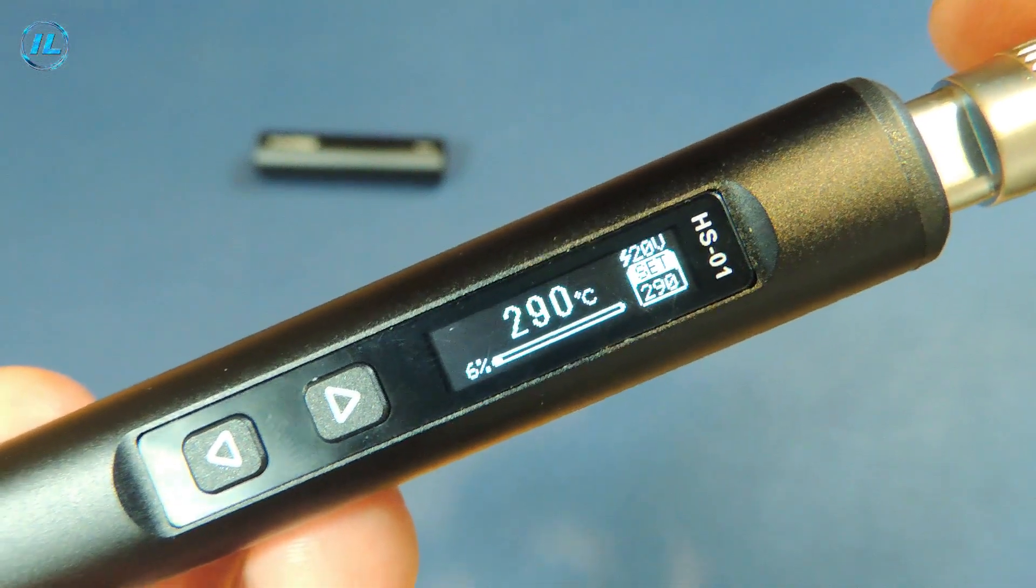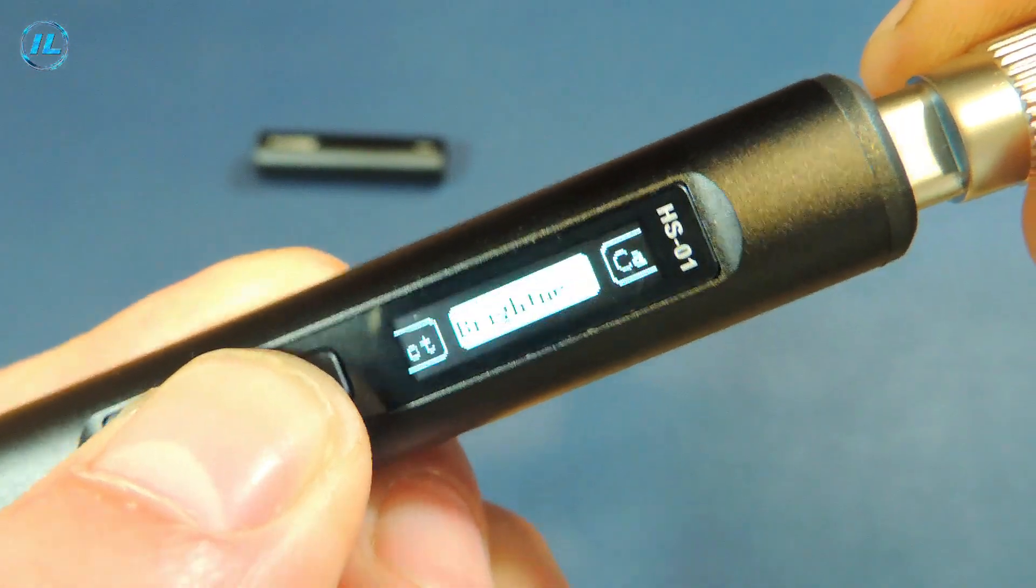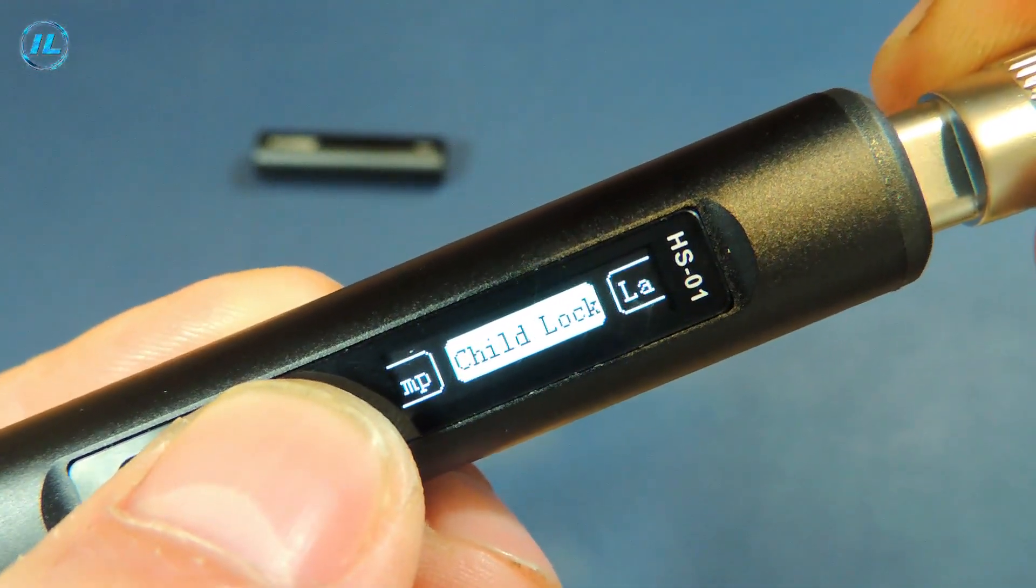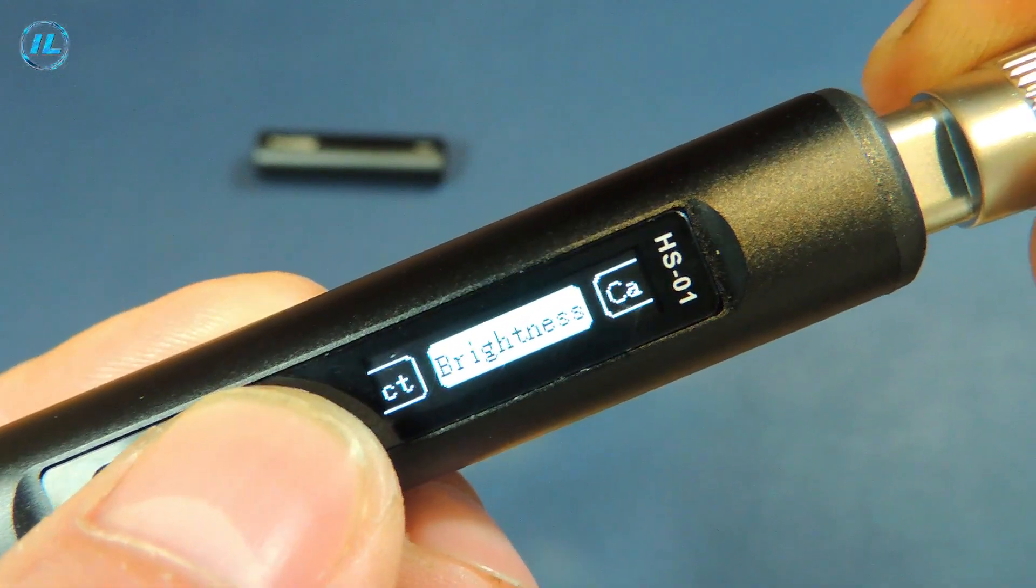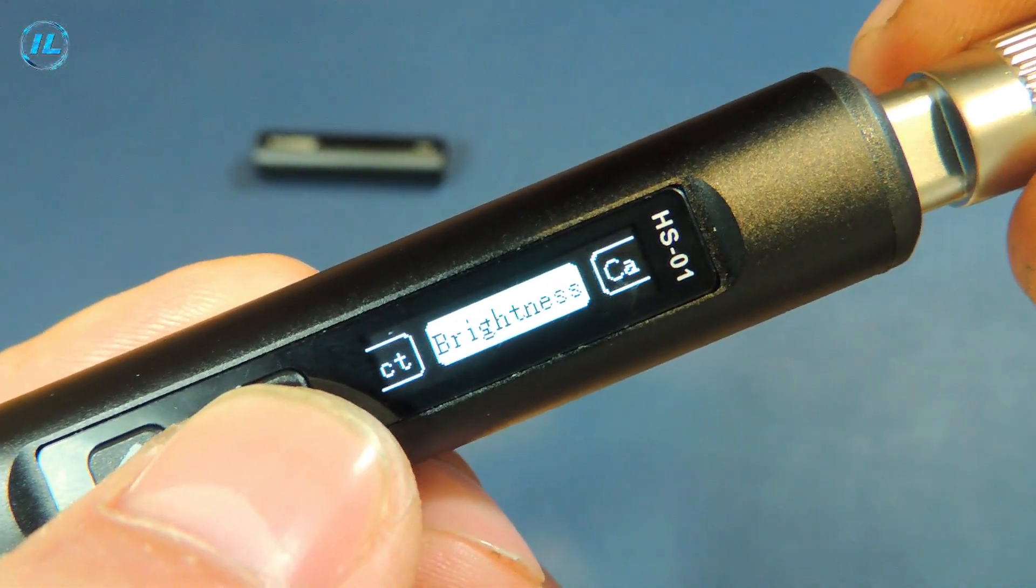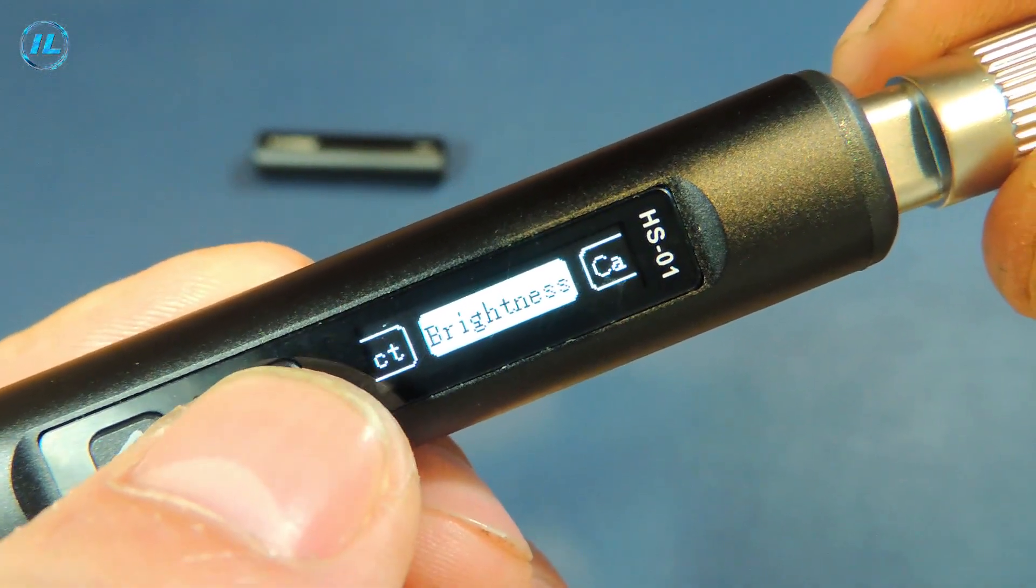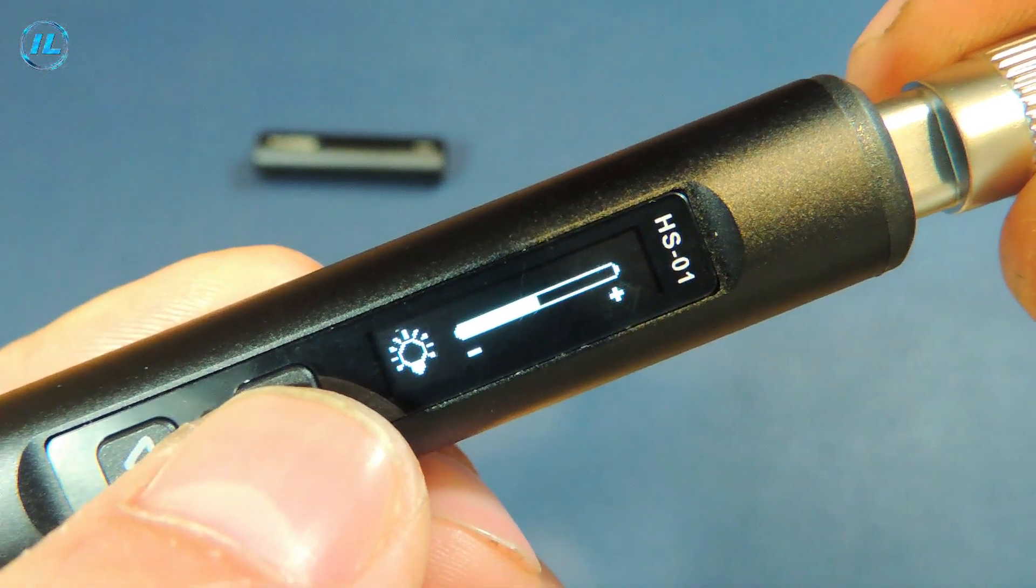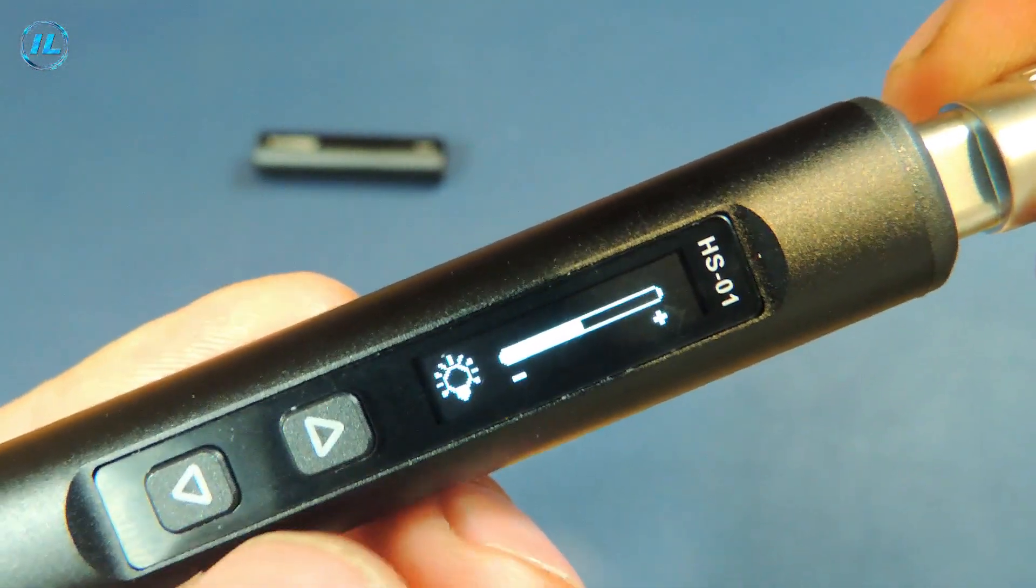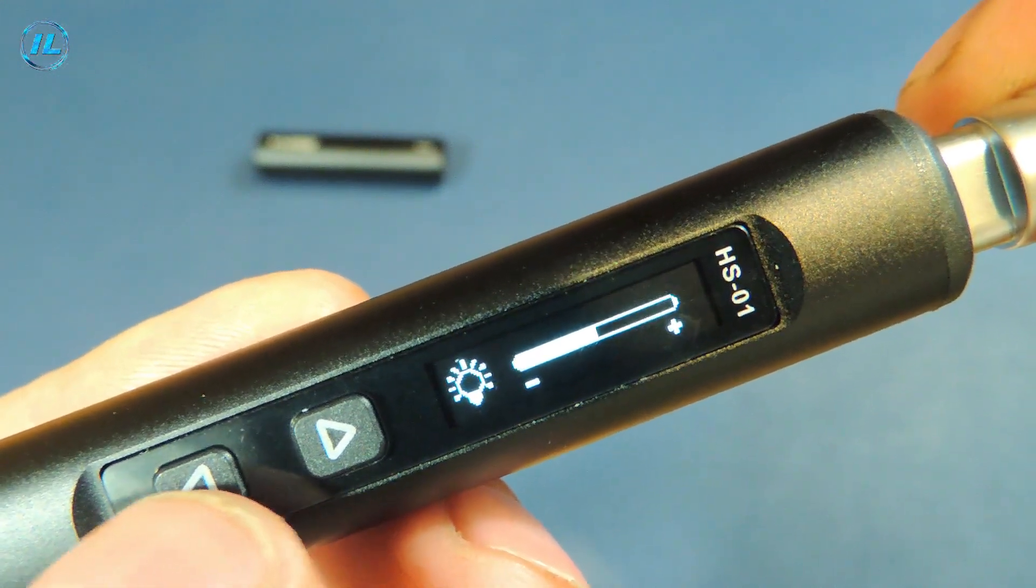In order to switch to the menu mode, you need to press these two buttons simultaneously. And here you can already navigate through the menu items. Let's take a closer look at each of these points. The first point is the brightness of the screen. If you press the right button for a long time, you can go to this point and select the desired indicators. A long press on the left button takes you to the main menu.